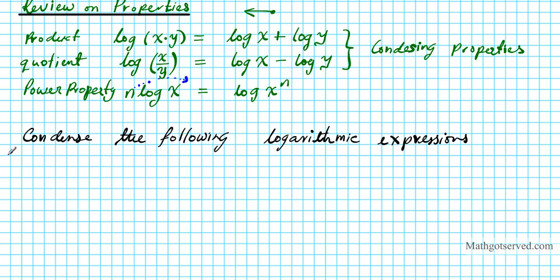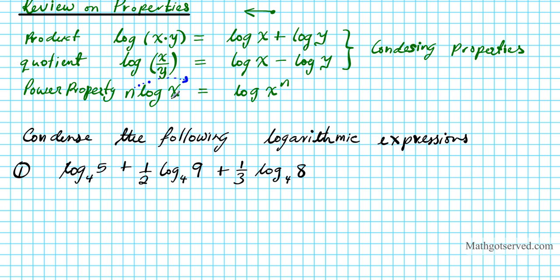For number one, we have the expression log base 4 of 5, plus one-half of log base 4 of 9, plus one-third of log base 4 of 8. I also like to call the power property the uniformity property, because it helps create uniformity with your logarithmic terms so they can be combined. If the logs aren't uniform in their base, you can't combine them.